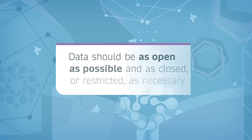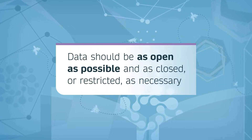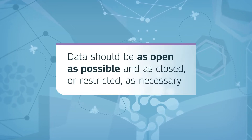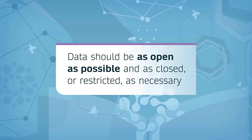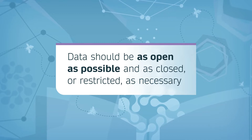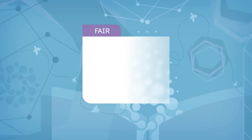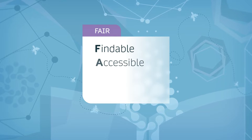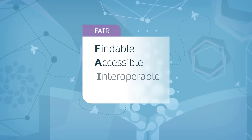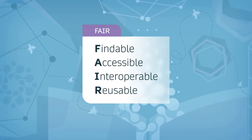Certain data may be too sensitive to be shared openly — for example, to protect participant privacy. So we also talk about data being as open as possible and as closed or restricted as necessary. In addition to open data, we also talk about data being FAIR, meaning findable, accessible, interoperable and reusable.